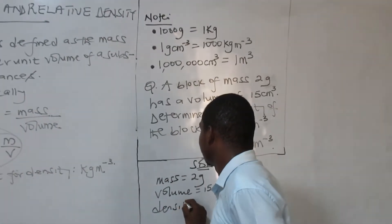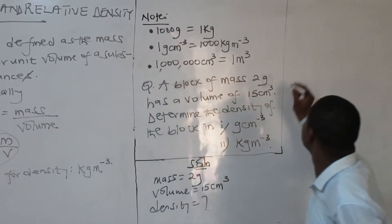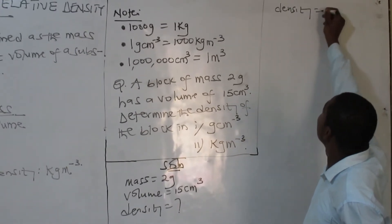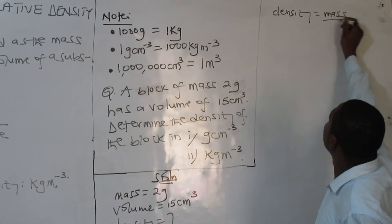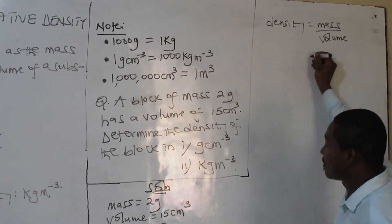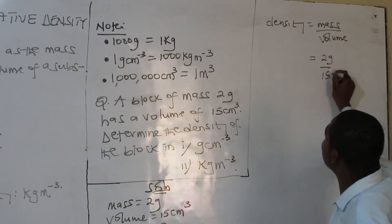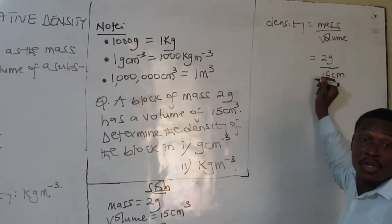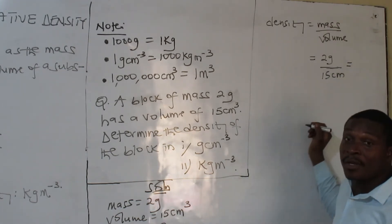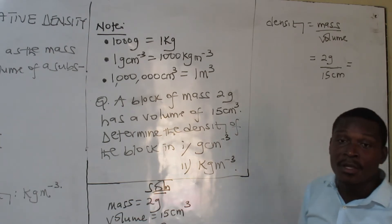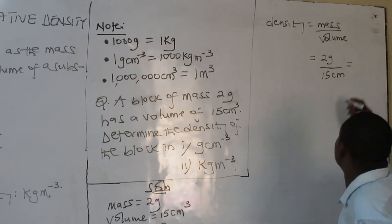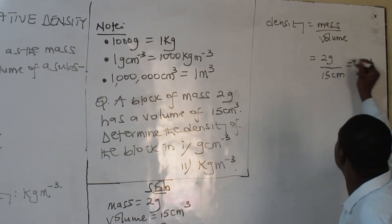So density equals mass over volume. My mass is 2 grams and my volume is 15 cm³. When you calculate 2 over 15, what are you going to get? You get 0.133. So 0.133 — this is grams, and there is a division sign, and there is cm³.